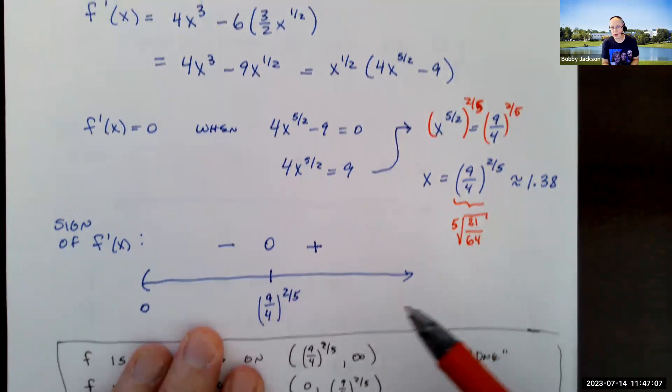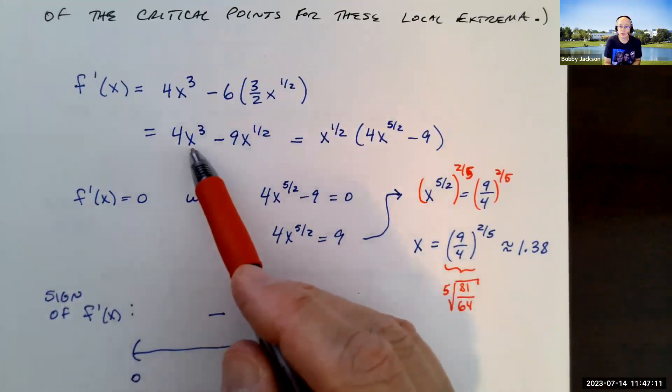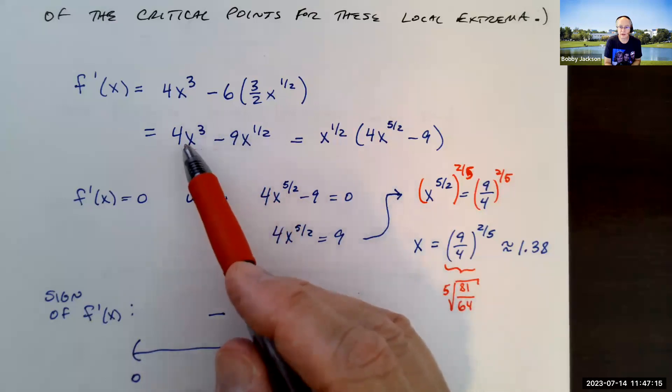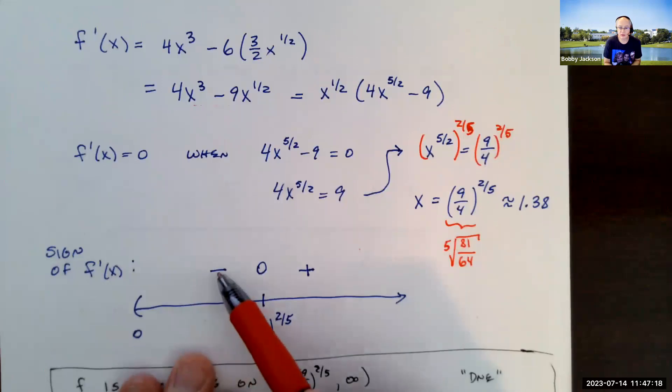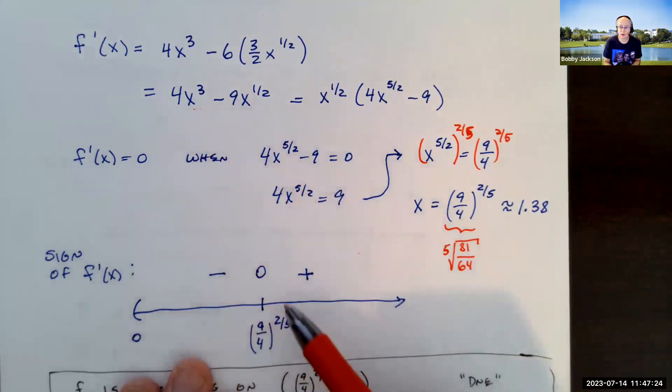So plug in something less than 1.38, like one. And if I plug one into my derivative, you can just plug it in right here. Here's the derivative. If x is one, I get four minus nine. I get negative five. It's negative. And if I plug in something greater than 1.38, like two, if I plug in two or something bigger than that, I'm going to get a positive number. You can check and confirm that.